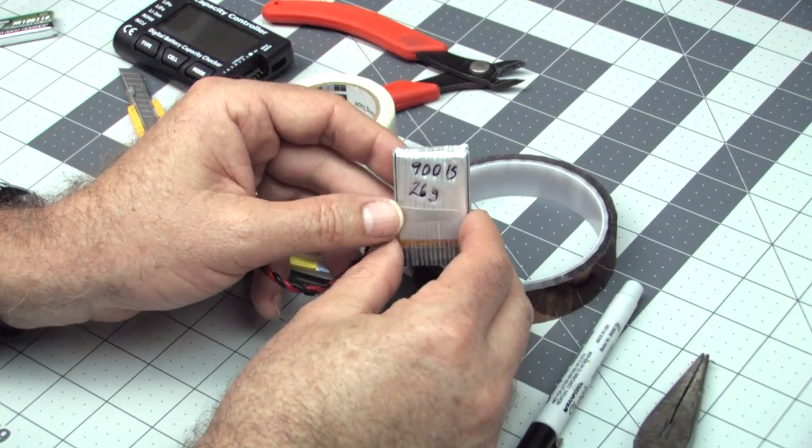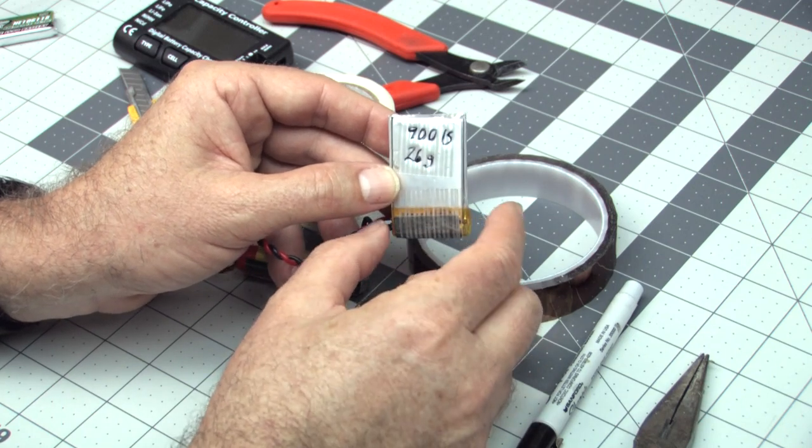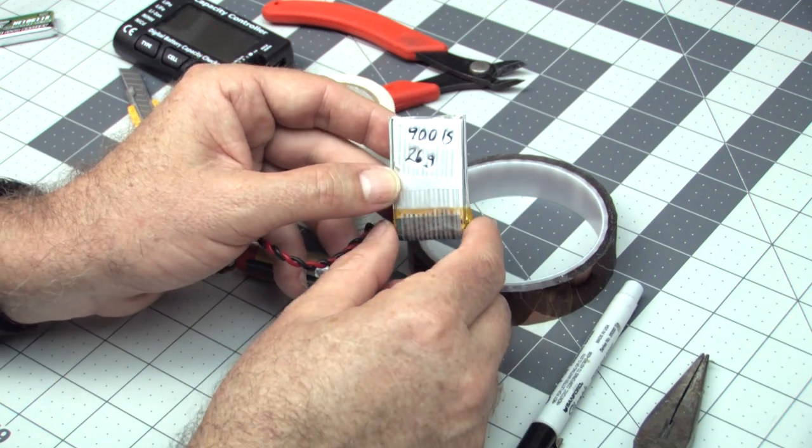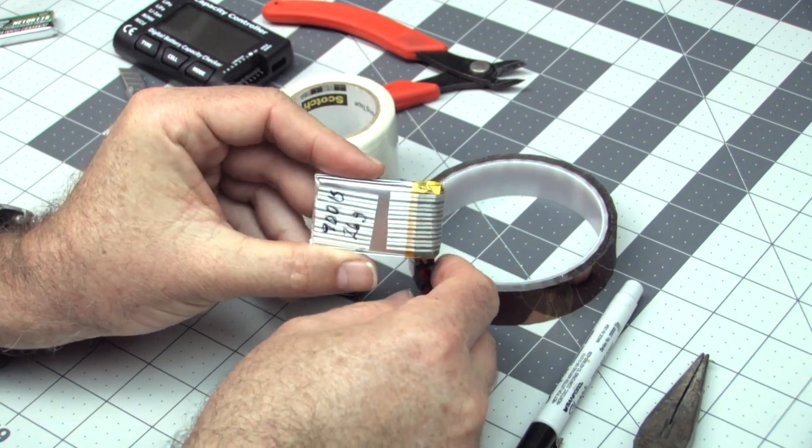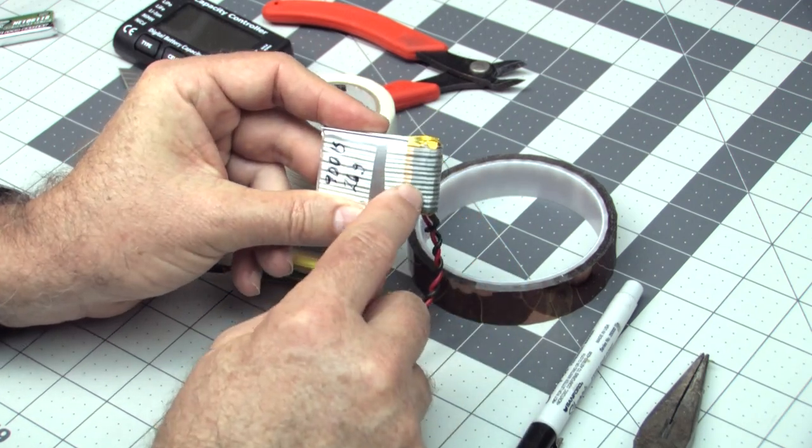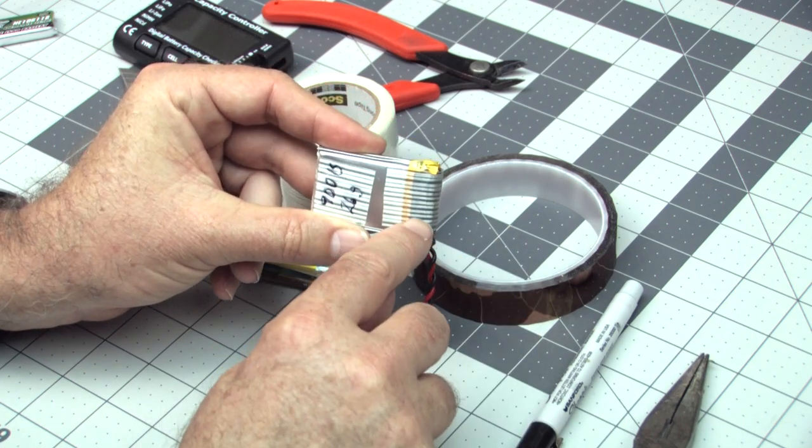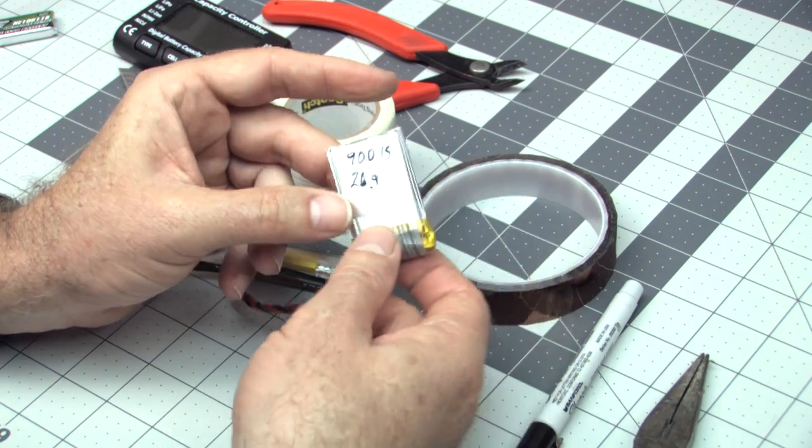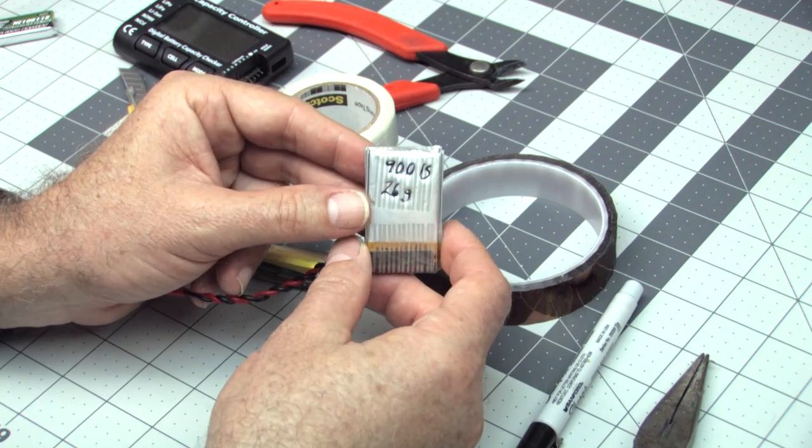So here's our finished pack. It's now a 900 1S and at 26 grams. So it actually saved weight from the original pack, mostly because of the balance connector that we're not going to need anymore. So I assembled this just like the other one. Three layers of Kapton tape. I put the rubber protector over the top and used fiberglass reinforced strapping tape to cover the top and to secure the cells in the back. So this turned out pretty well, a little bit lighter than the stock one.